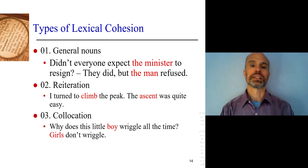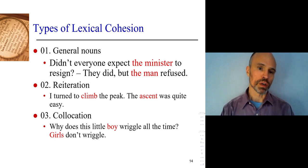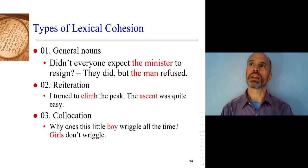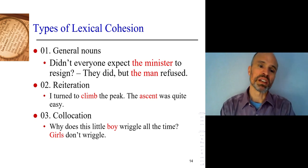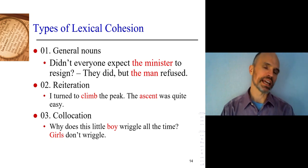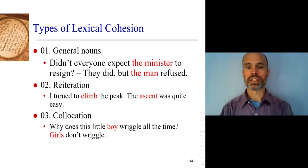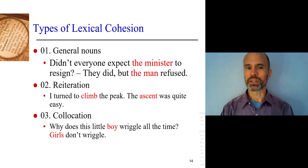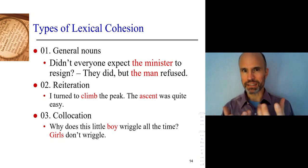Reiteration means saying the same thing again but with a different word — a synonym like 'climb' and 'ascend.' You're saying the same thing again in a different way. And collocation — if you look at how it's got 'location,' meaning place, and 'co-' meaning 'with' — so collocation means 'with place.' That's a good way to remember it: words that we expect to see with each other in the same place.